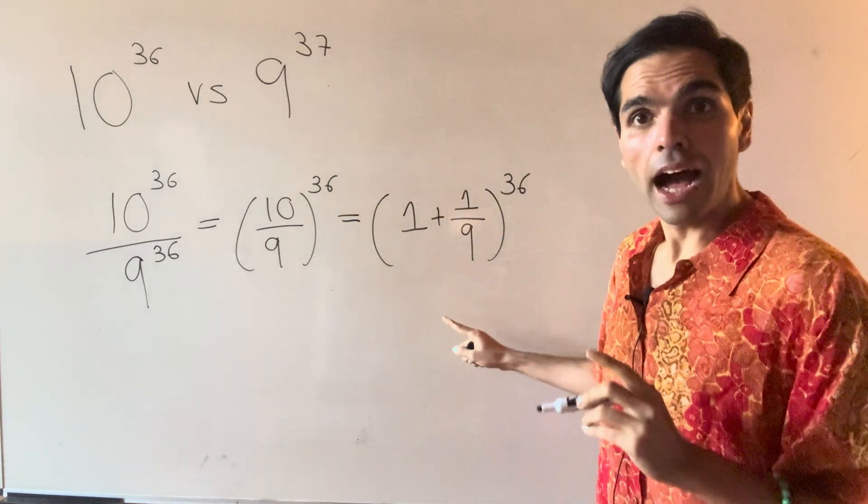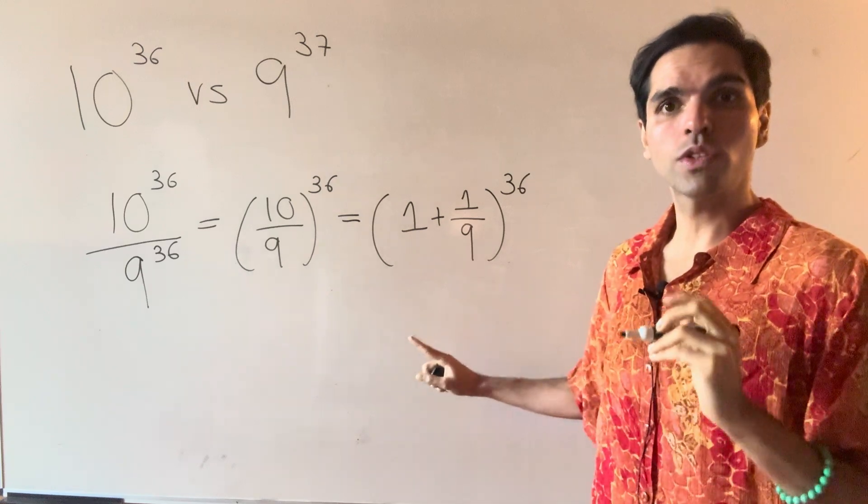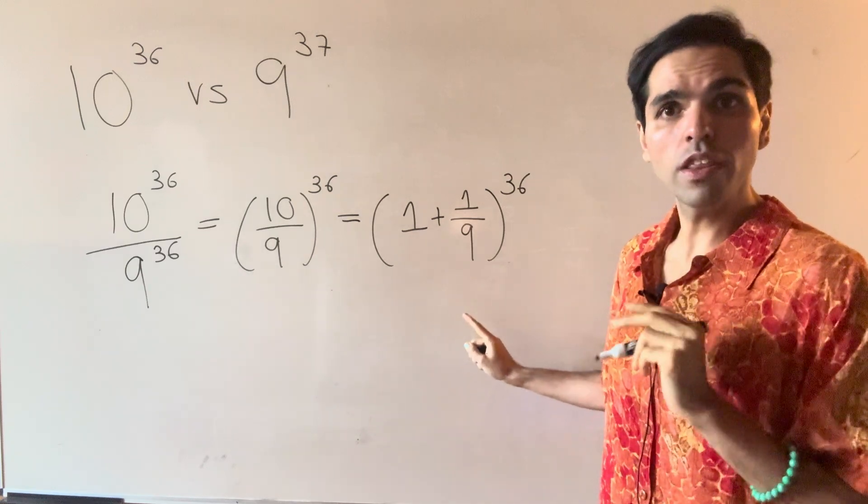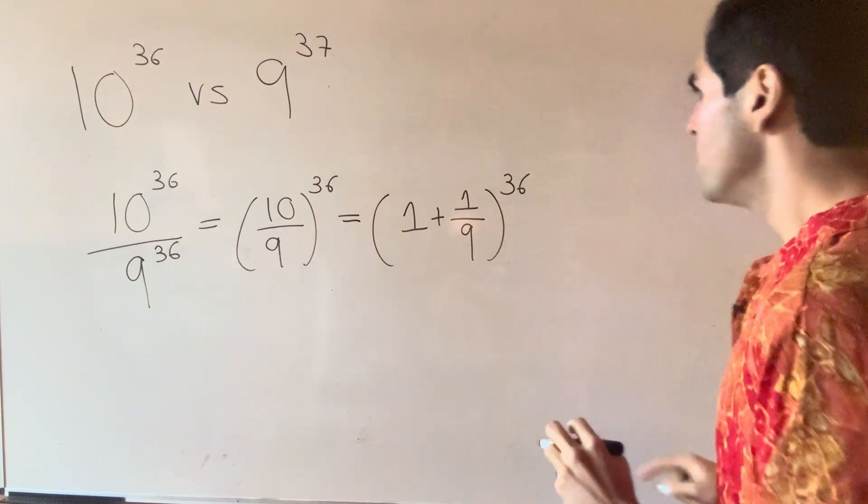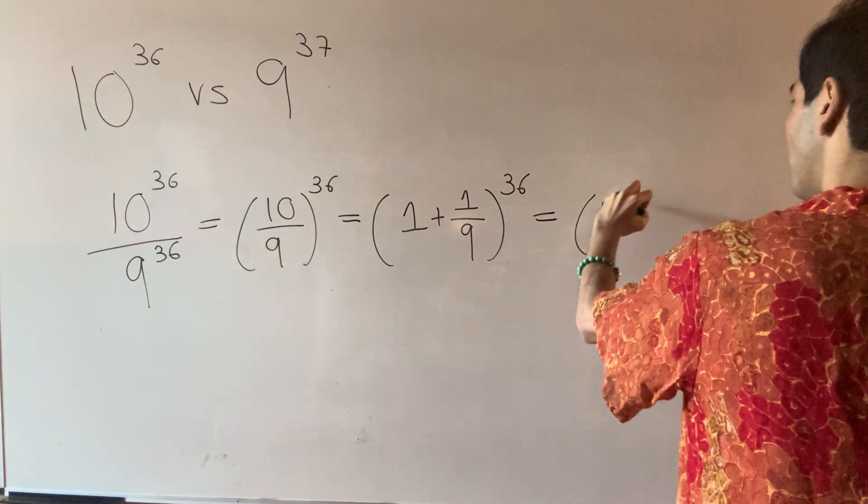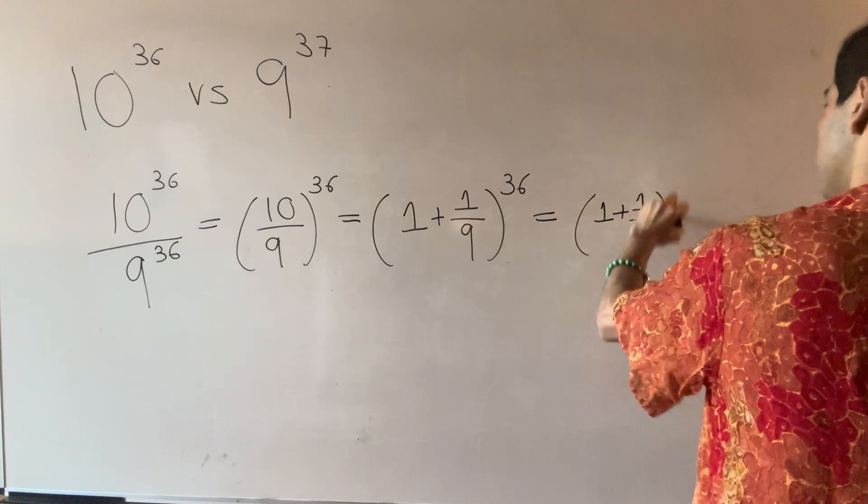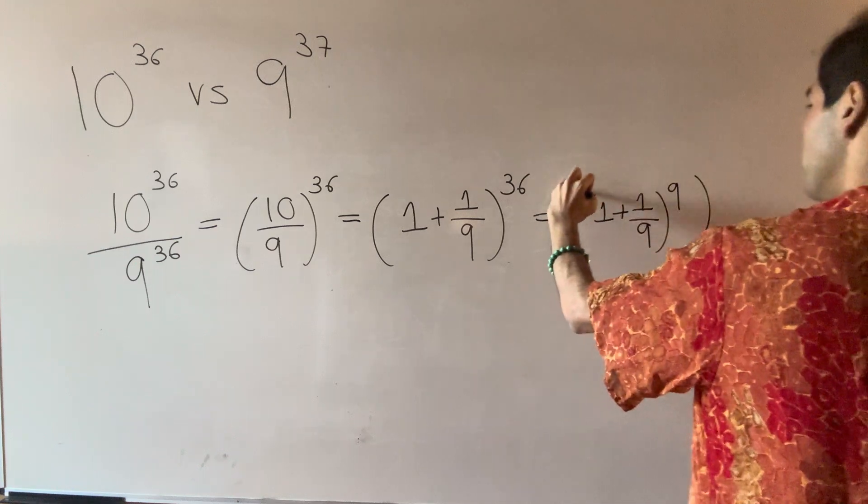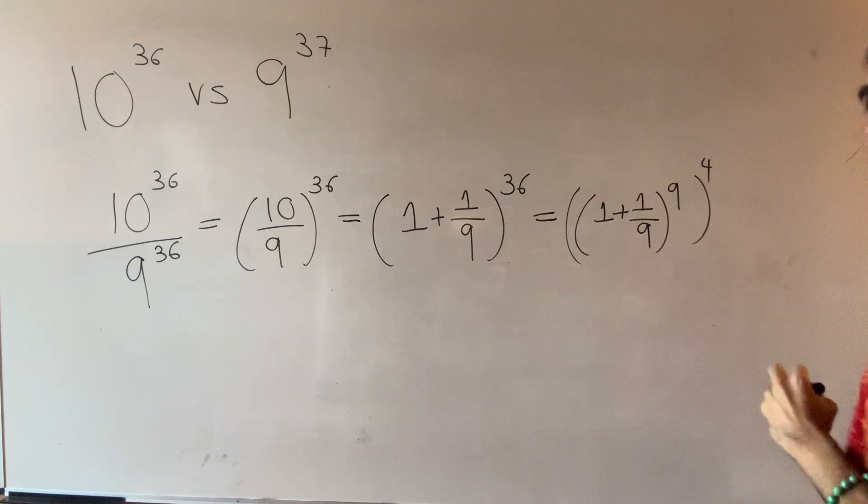And the idea is we want to use what's called Bernoulli's inequality, but with a clever power. So this is the same thing as (1 + 1/9)^9 to the fourth power.